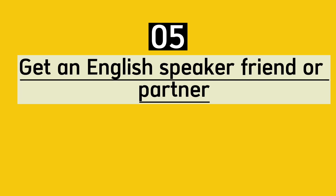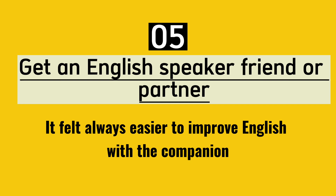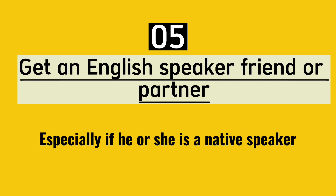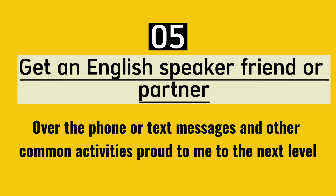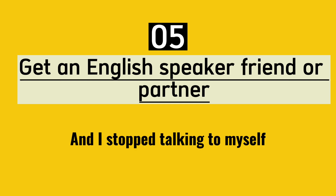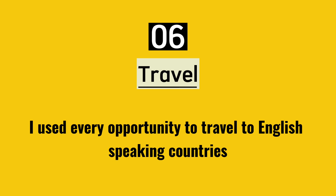Tip five: get an English-speaking friend or partner. It will always be easier to improve your English with a companion, especially if he or she is a native speaker. I noticed a dramatic improvement when I moved in with my boyfriend. Regular chats in person, over the phone, text messages, and other common activities brought me to the next level, and I stopped talking to myself.